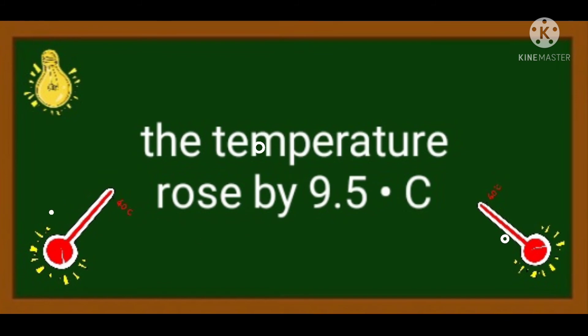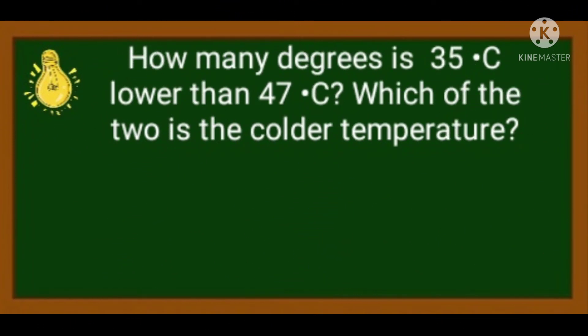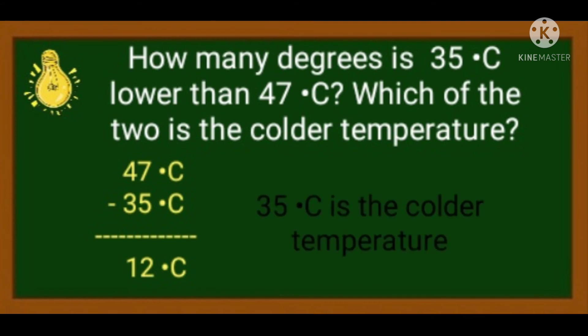Okay, let's try problem number 3. How many degrees is 35 degrees Celsius lower than 47 degrees Celsius? Which of the two is the colder temperature? Our clue word there is lower than. Ibig sabihin, isosubtract lang natin ang 35 degrees Celsius sa 47 degrees Celsius that will give us a difference of 12 degrees Celsius. So, sa tanong na which is colder, the answer is 35 degrees Celsius kasi mas mababa siya kaysa sa 47 degrees Celsius. Mas mababang numero, mas malamig po siya kapag positive degrees.